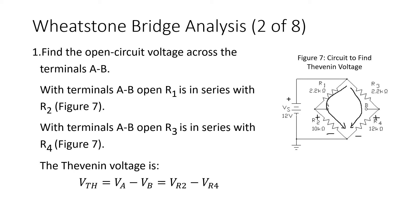We could also have gone from A to B through R1 and R3, which would give us minus V_R1 plus V_R3. The values will be the same regardless of which direction we take, because if we go all the way around the loop, the voltages must add up to zero.